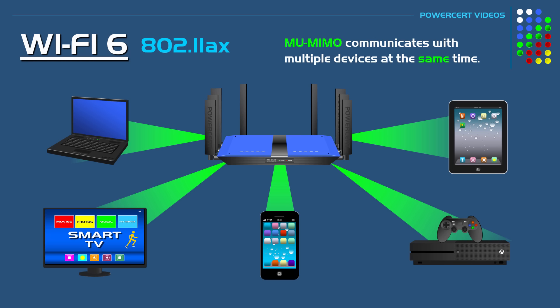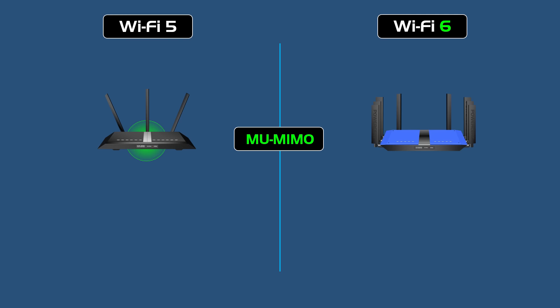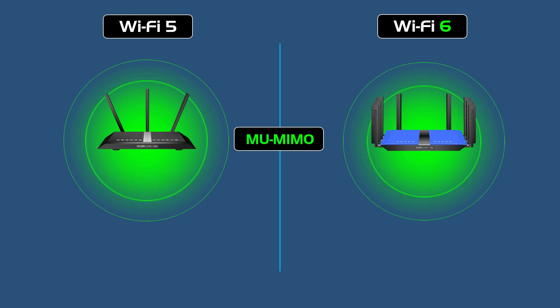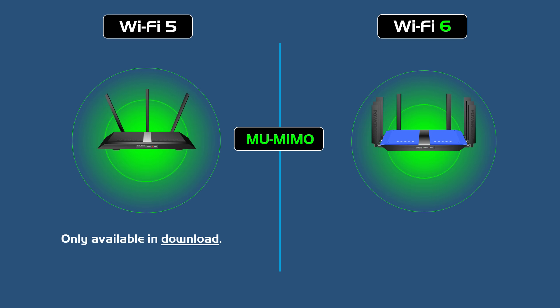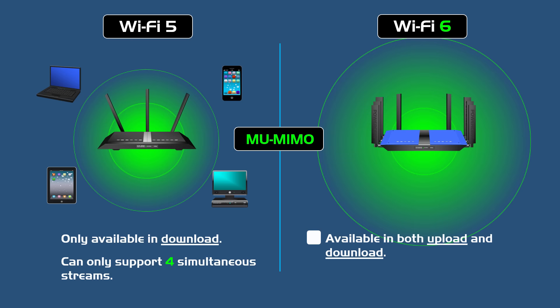MU-MIMO breaks up the internet bandwidth into individual streams and pushes it to the connected devices, so you'll see a significant improvement in speed if you're doing things that require a lot of bandwidth, such as streaming videos or downloading. MU-MIMO debuted in Wi-Fi 5 version 2, but it has improved in Wi-Fi 6. In Wi-Fi 5 it was only available for download and could only support four simultaneous streams, but with Wi-Fi 6 it's available in both upload and download and can support up to 12 simultaneous streams.